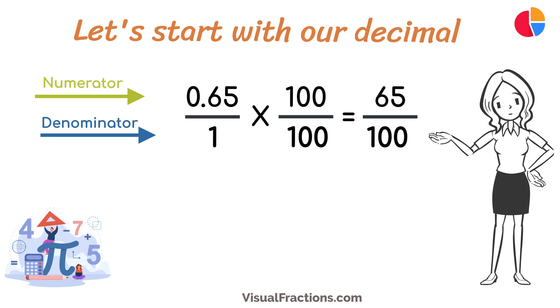Both the numerator and the denominator in 65 one-hundredths are divisible by 5, the greatest common divisor. Divide 65 by 5 to get 13 and divide 100 by 5 to get 20.